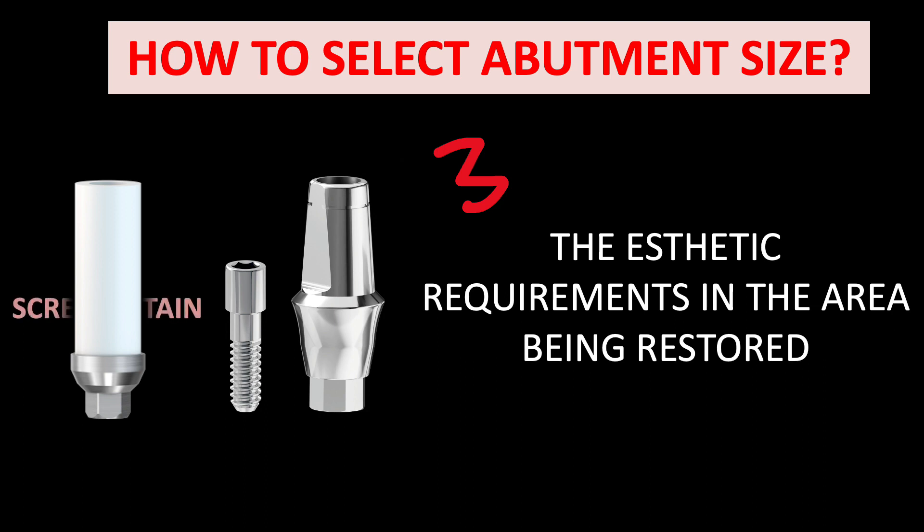Looking at the figure, the first is the castable abutment, which is used for screw-retained prosthesis, and the second is a prefabricated abutment, which is used for cement-retained prosthesis. The prefabricated abutment is basically given in the anterior region of the jaw, as the access hole of the castable abutment is not visible in the case of cement-retained prosthesis.